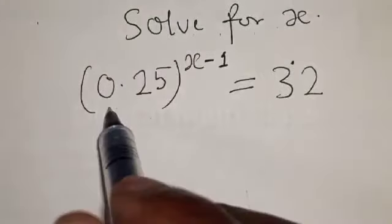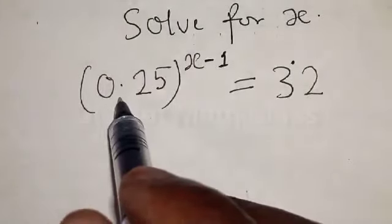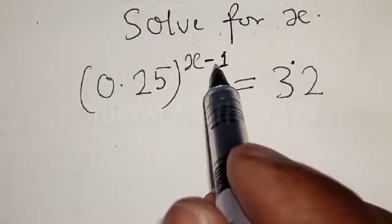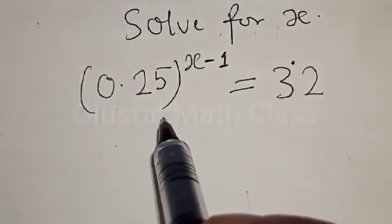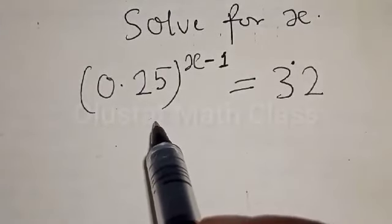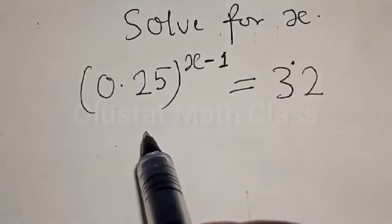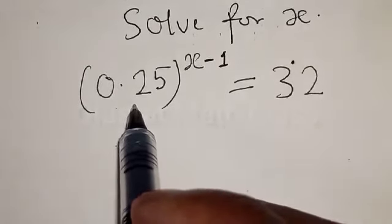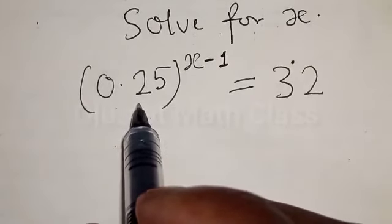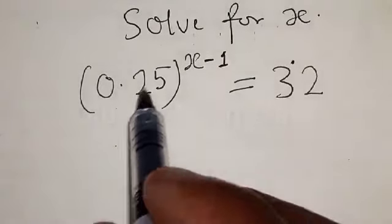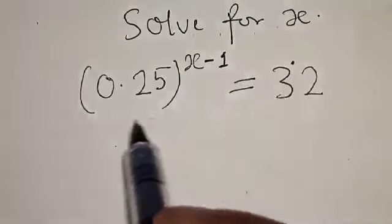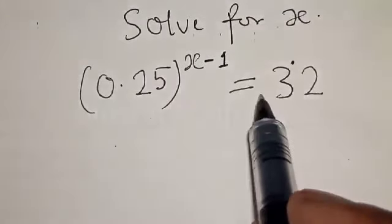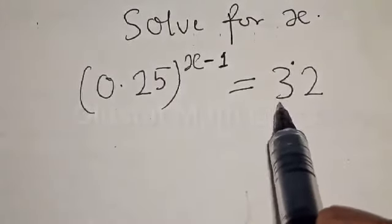Solve for s: 0.25 raised to power s minus 1 is equal to 32. Hi everyone, welcome to my class. In this class we want to look at how we can quickly solve for s from this given exponential equation: 0.25 raised to power s minus 1 is equal to 32.